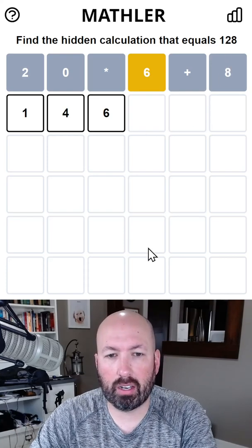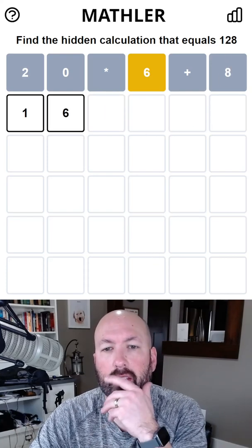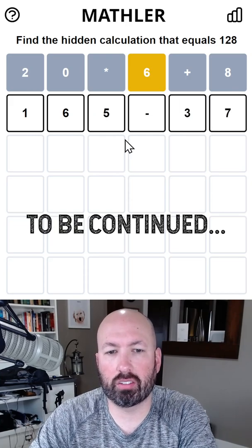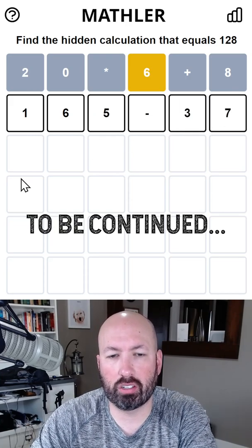So it's got to be 160 something. I'm going to go with 165 minus 37. That'll get us some unique, new digits to try here.